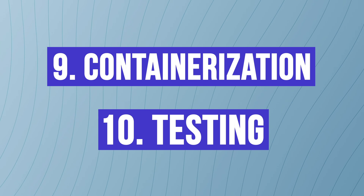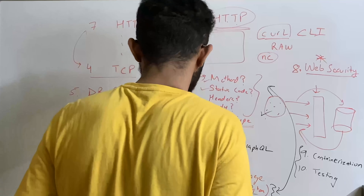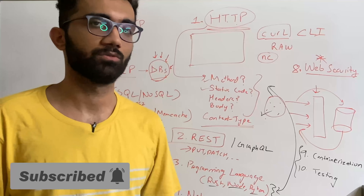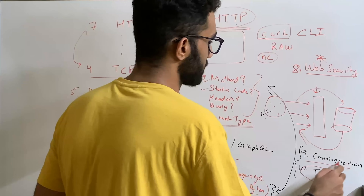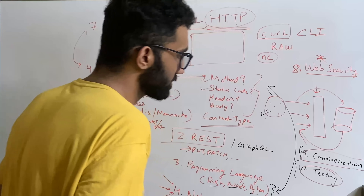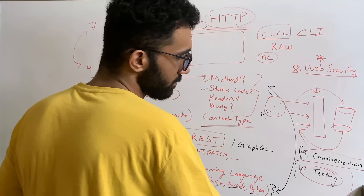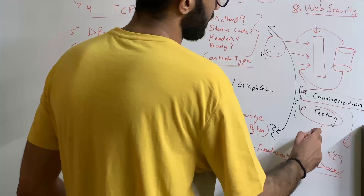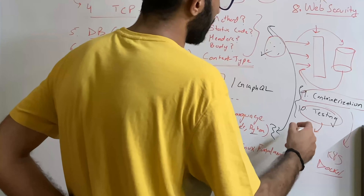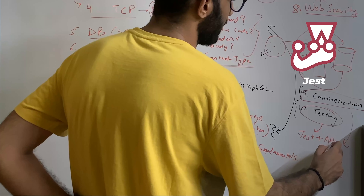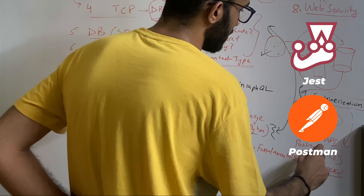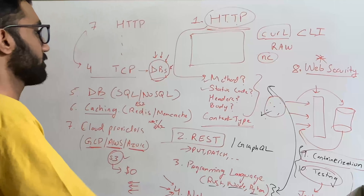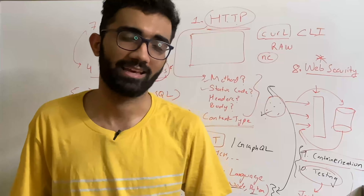I would put number nine and number ten as optional: containerization and testing. Maybe not entirely optional — testing is super important, and you can only live without it to a certain extent. These are more high-level production practices. For containerization, Kubernetes is overkill for most things; Docker is beautiful and you can use Docker for containerization. For testing, you could spin up a Jest configuration with some API testing, or Postman-based testing as well. The crux, the meat of the thing, are the other eight topics which are super important as a backend developer.